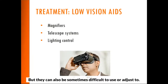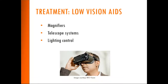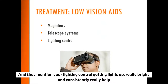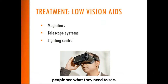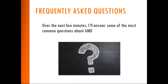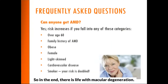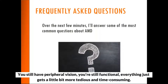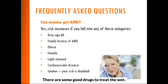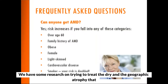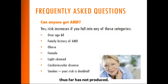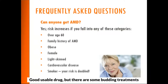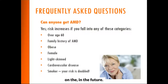In the end, there is life with macular degeneration. You never lose all your vision from the disease — you still have peripheral vision and are still functional; everything just gets a little more tedious and time-consuming. There are some good drugs to treat the wet form. We have some research on treating the dry form and geographic atrophy that thus far has not produced a good usable drug, but there are some budding treatments on the horizon.